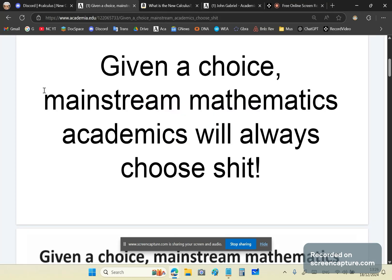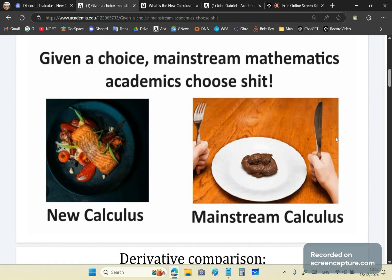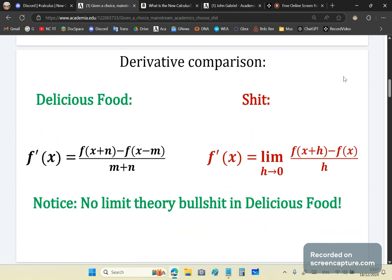Given a choice, mainstream mathematics academics will always choose crap. It's as simple as that. It doesn't matter how much a crank is confronted with overwhelming evidence, they will either reject it. And if they know that it's right, they will still reject it because of their tenures. They have failed dismally to formulate a rigorous formulation of calculus.